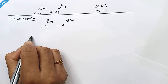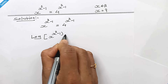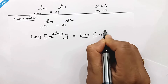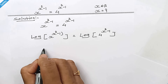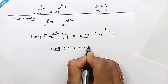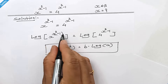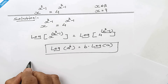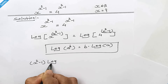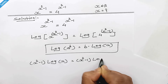So let's take log both sides. It will be log of x to the power x square minus 1 is equal to log of 4 to the power x square minus 1. Now when we have log of a to the power b, it can be written as b times log of a, so this exponent can be factored out. It will be x square minus 1 times log of x is equal to x square minus 1 times log of 4.